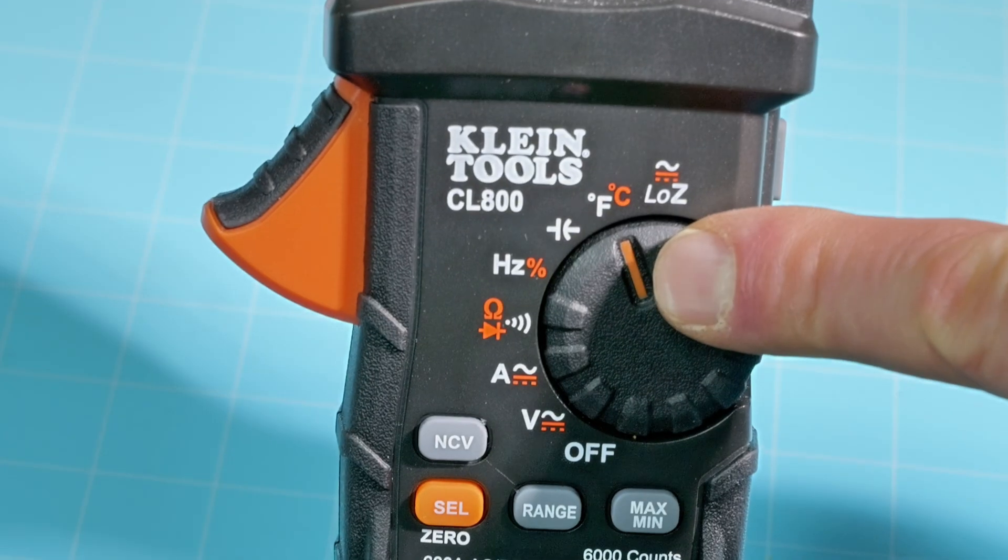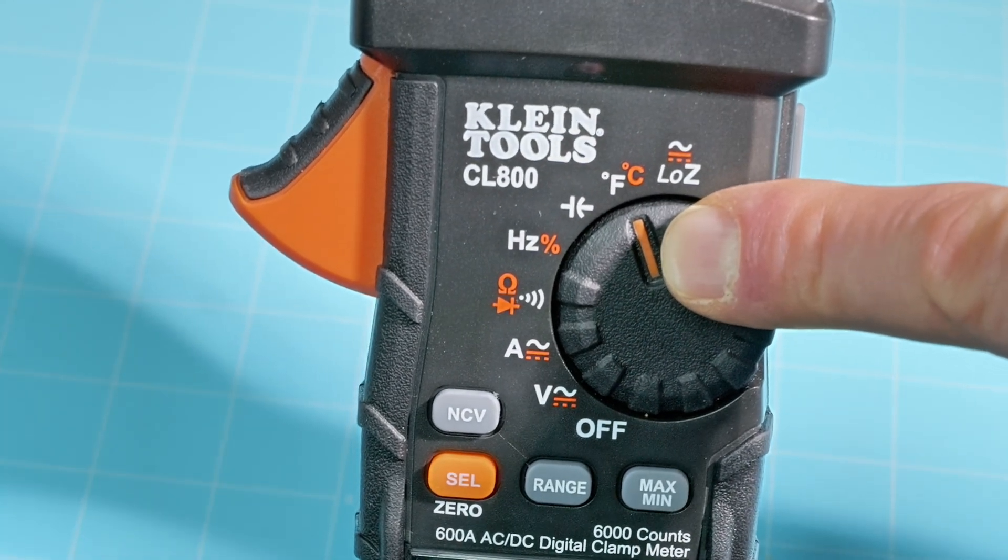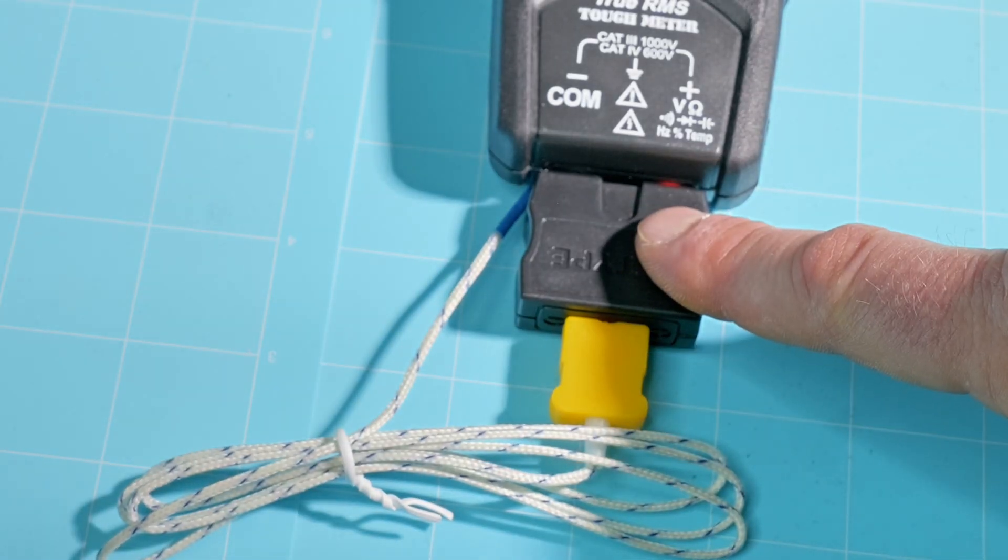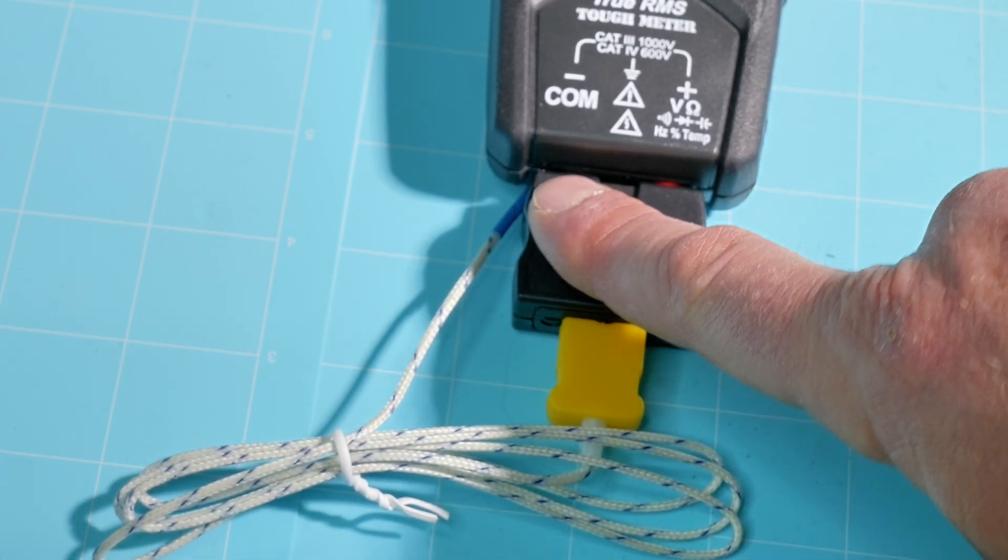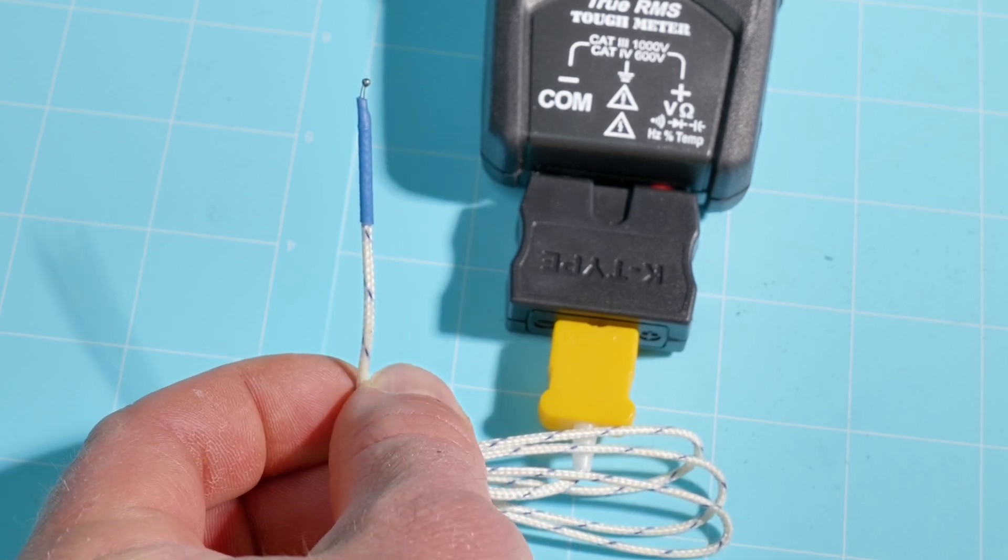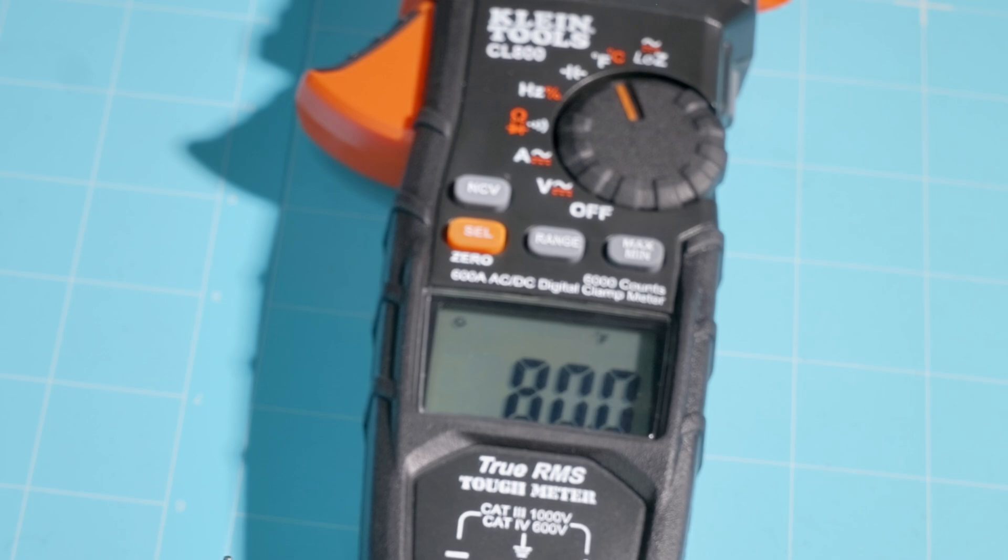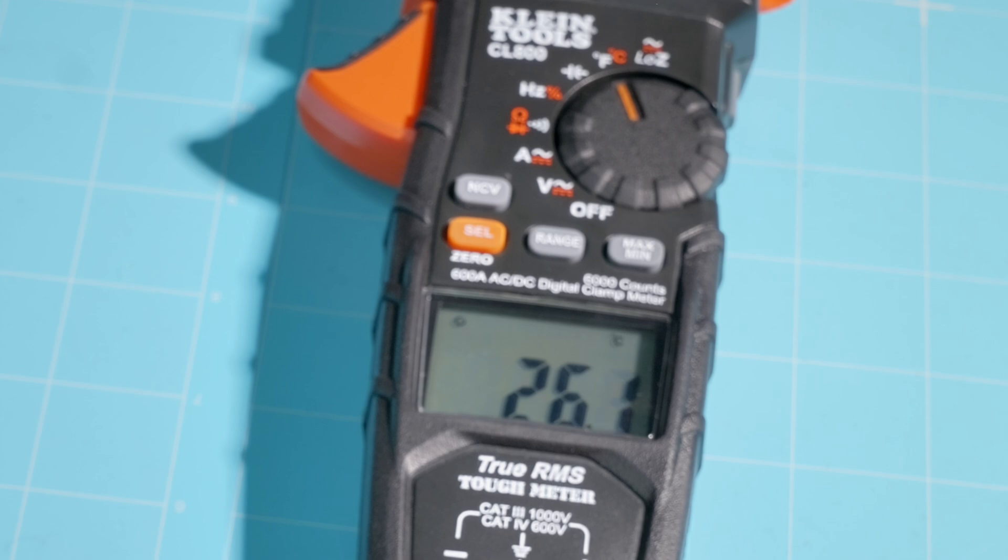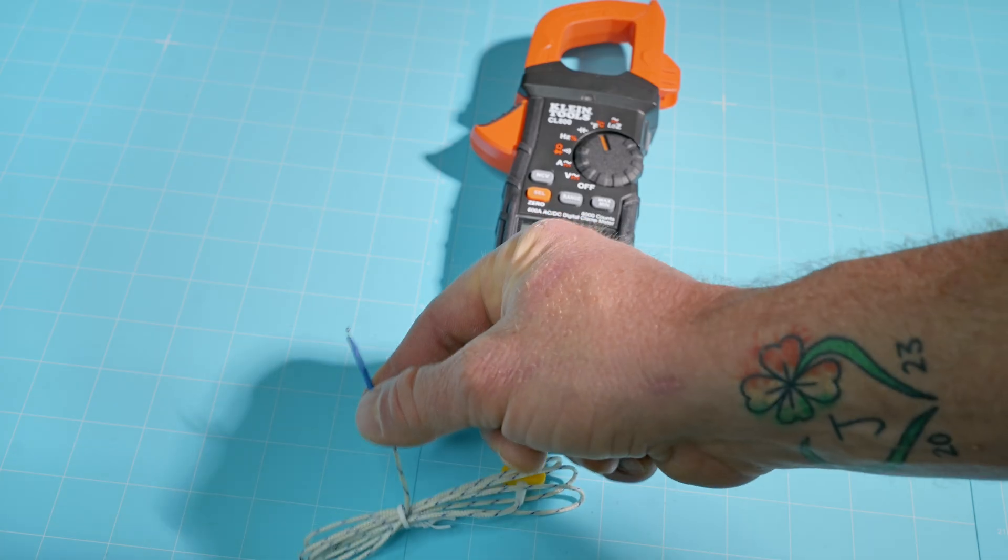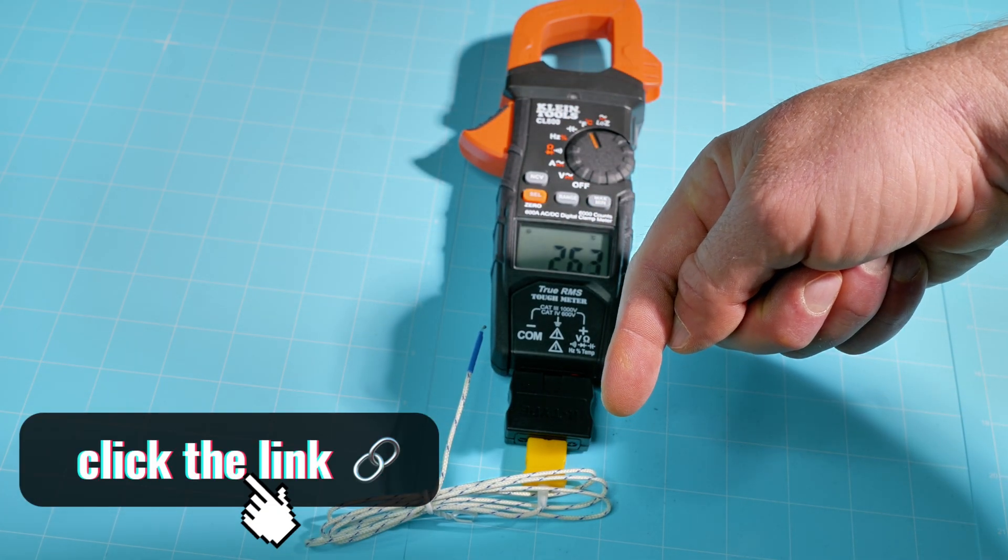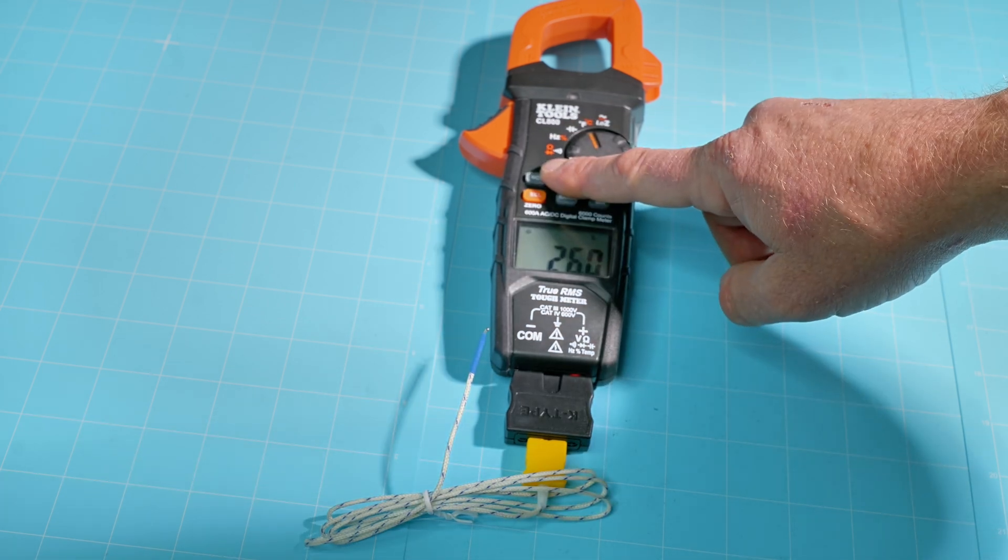Next up is our temperature reading. We have Fahrenheit and Celsius. We're going to start out with Fahrenheit. This is a real easy one. You're just going to plug your probe into the red and black terminals on the bottom. You have your temperature probe right there. In this quite warm room right now with the lights on, we're reading about 80 to 81 degrees Fahrenheit. If you wanted to read in Celsius, quickly hit that orange button. We're looking at about 26.4 degrees Celsius for all our Canadian friends. It's a very handy feature included with the CL800. This thing has been a lifesaver.